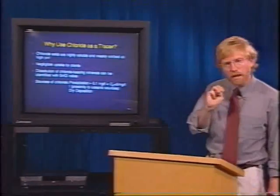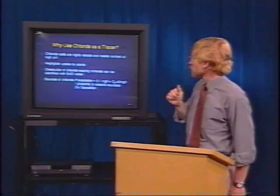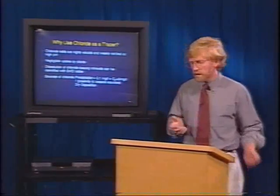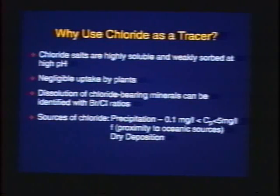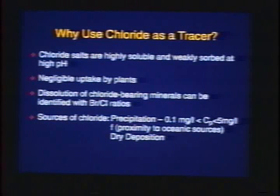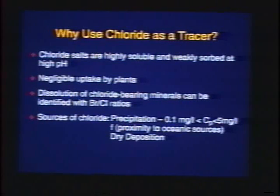Third technique — and again, independent. Let's look at a tracer: chloride. Chloride is a very interesting and useful tracer in hydrologic studies. Chloride salts are highly soluble, they don't tend to sorb much, particularly at higher pHs, so they're a fairly good conservative tracer. Chloride is not taken up by plants very much — making it more conservative. We can look at bromide-to-chloride ratios to check for dissolution or production of chloride from minerals in the unsaturated or saturated zone.